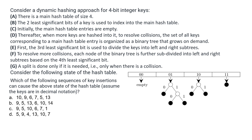This equation is based on hashing. We are considering a dynamic hashing approach for 4-bit integer keys. These are the given conditions which specify how the hashing is exactly done. There is a main hash table of size 4, so we have a hash table only of size 4, not greater than that.